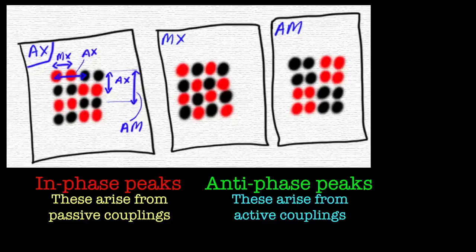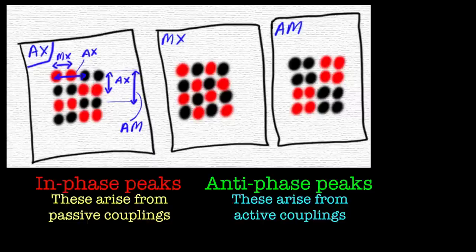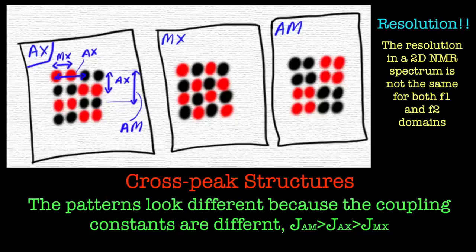But for this cross peak, it's the AX spin we're interested in, the AX coupling constant. And that is given as the distance between the two anti-phase peaks. And that will be the same in both directions, but be careful, the digitization resolution is different in the F1 and the F2 domain on your spectrum.